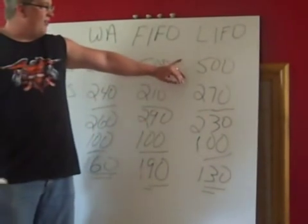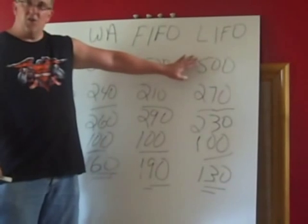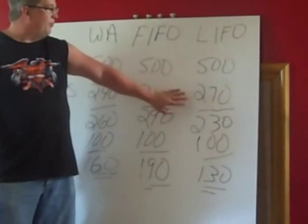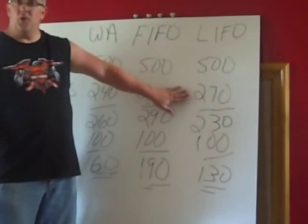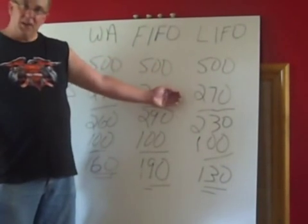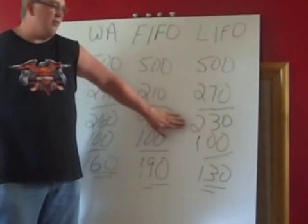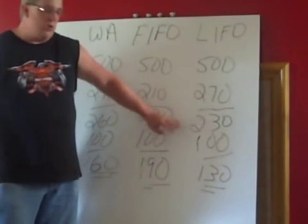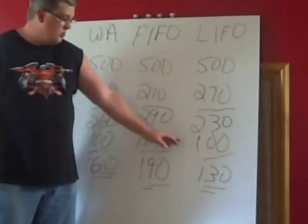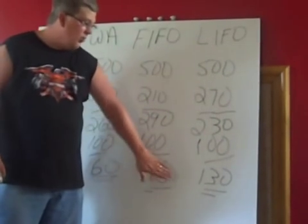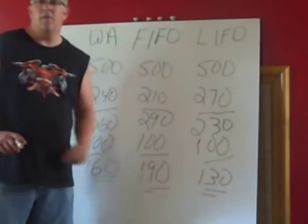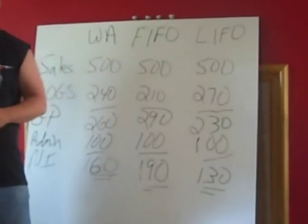And finally, under LIFO, sales remain the same. Cost of goods sold were $270 in that example. So our gross profit was $230; subtract our admin expense, and we had a net income of $130.